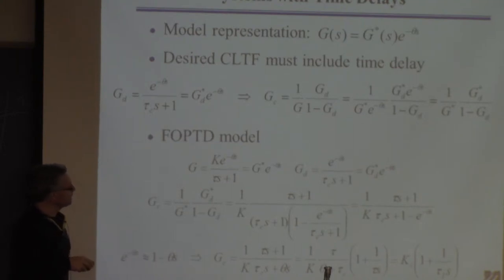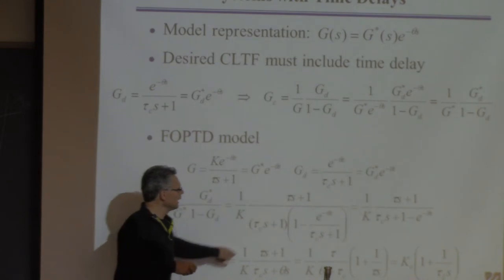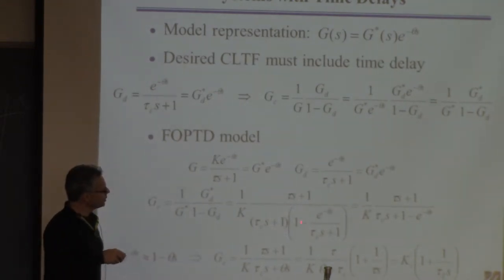The G star is this thing without delay. That's where this comes from. And then you have to have 1 minus the whole G_d thing, which has to include the delay.